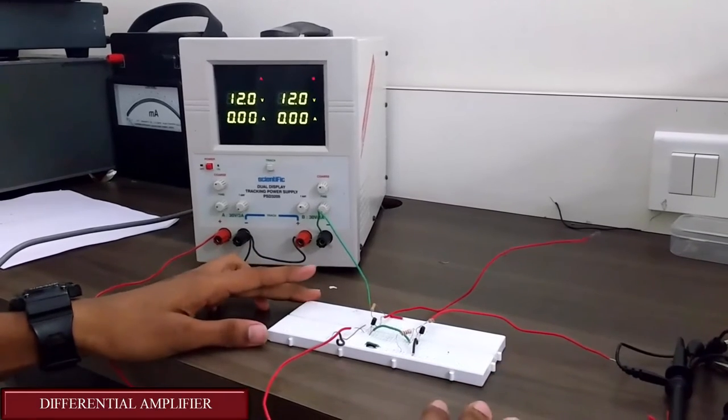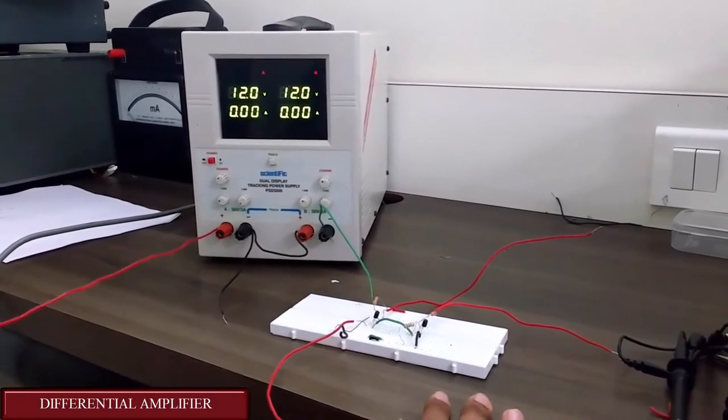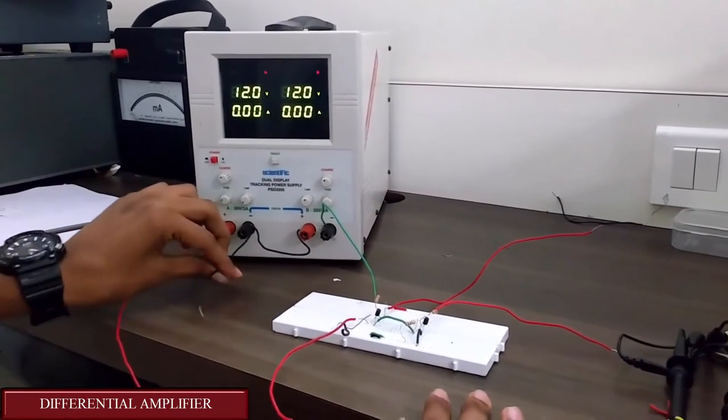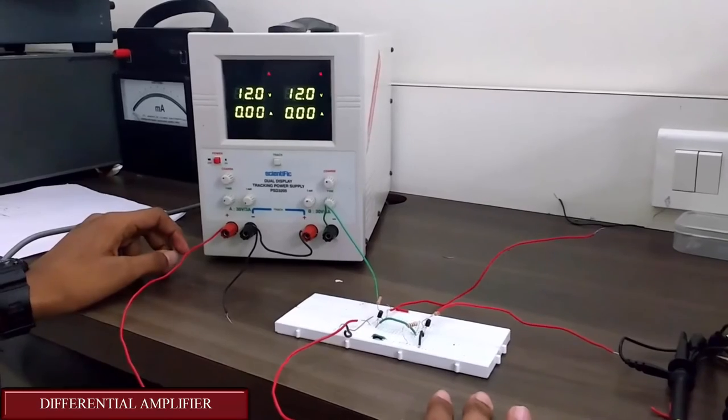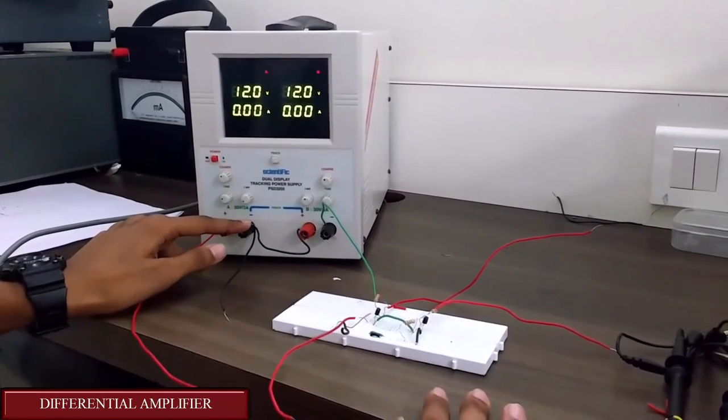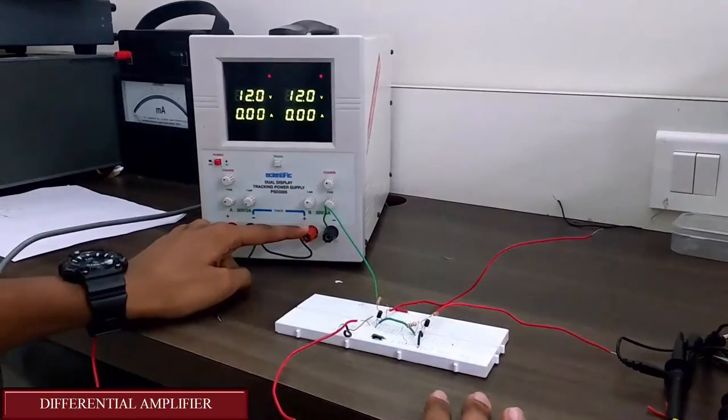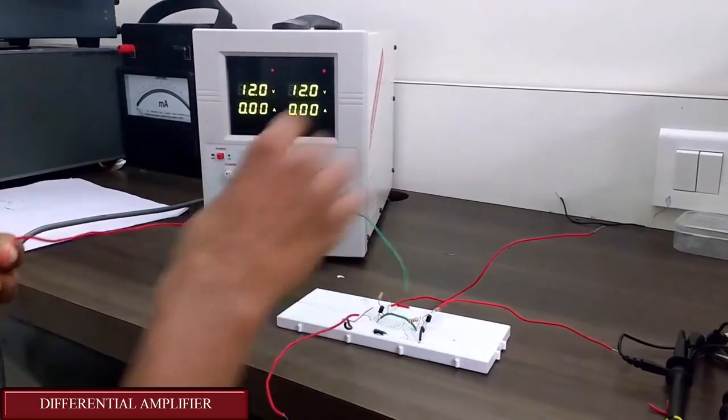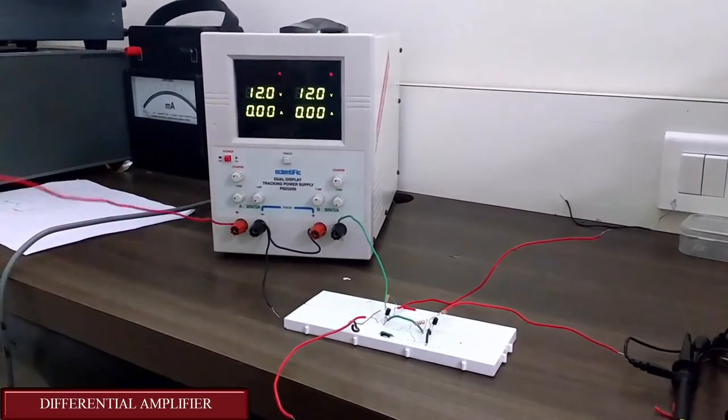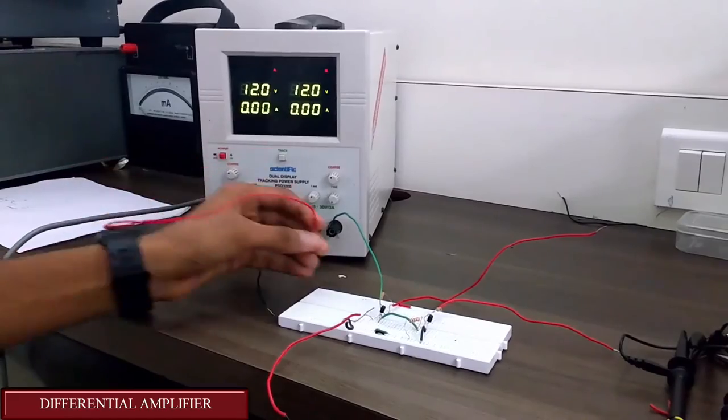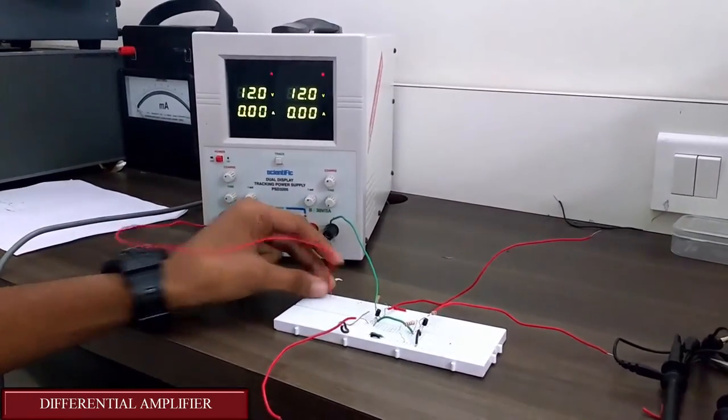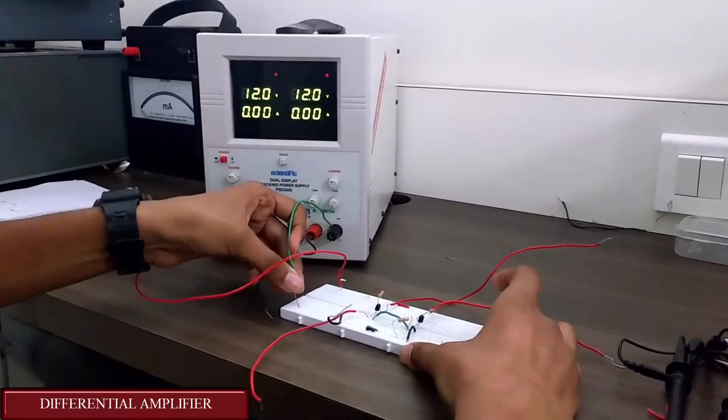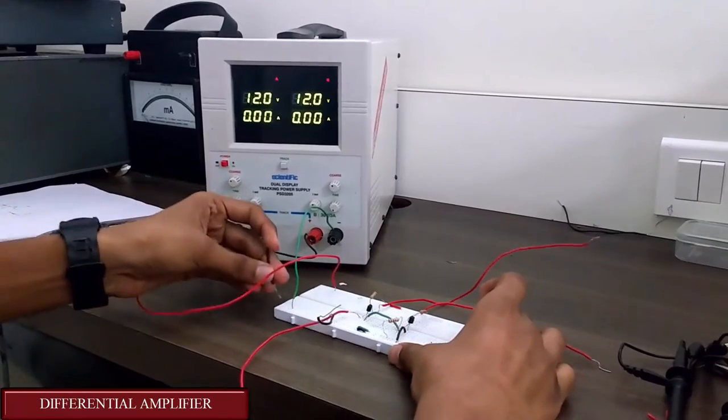Now let us give the power supply to this differential amplifier. The dual power supply can be obtained by connecting the ground terminal, the negative terminal of the first voltage supply, to the positive terminal of the second voltage supply. Here we get positive voltage, here the negative voltage, and this is the ground voltage. Now let us connect the positive 12 volts here, the negative 12 volts here, and this black is the ground terminal.